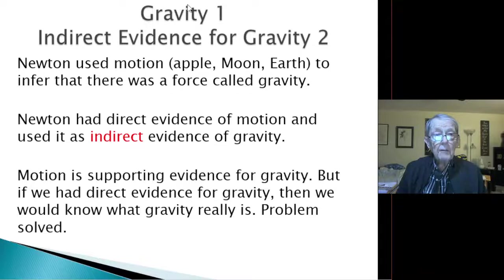But now, gravity 1, I'm saying, is indirect evidence for gravity 2. Gravity 1, again, is Newton or Einstein's type of gravity. It moves large objects like the earth, moon, and asteroids. But Newton used motion, motion of the apple, the moon, and the earth, to infer that there was a force called gravity. Newton had direct evidence of motion.